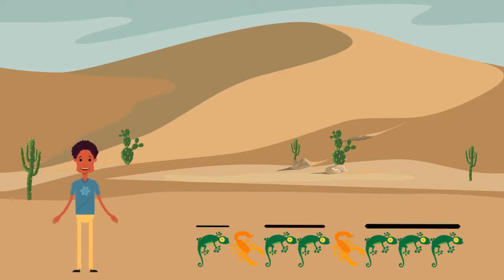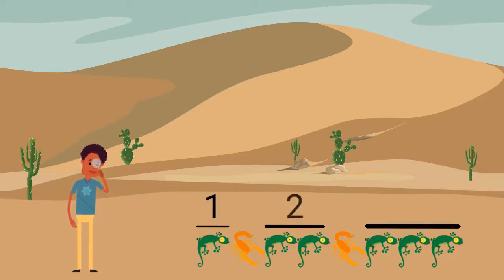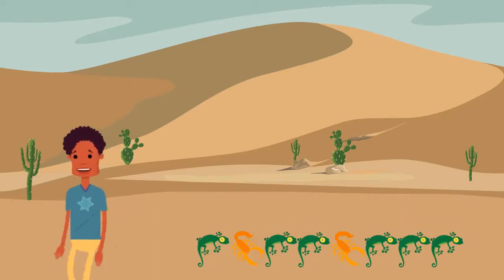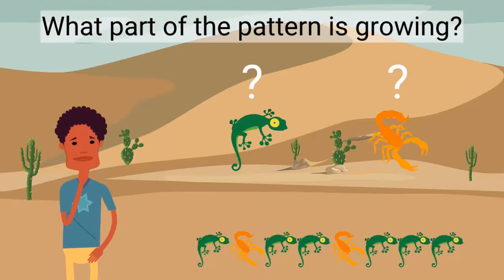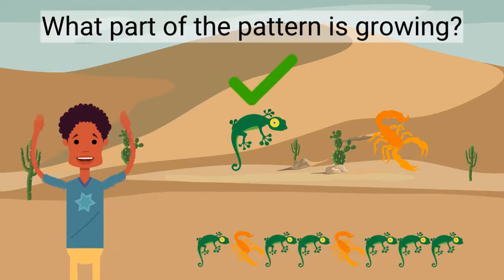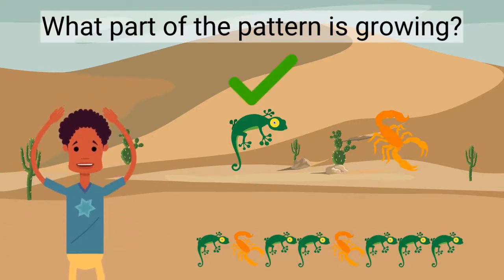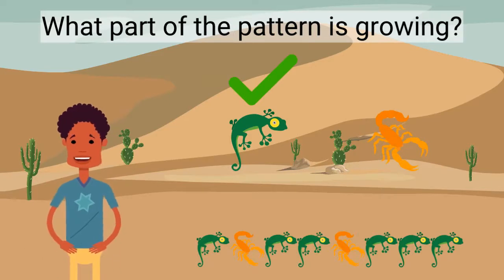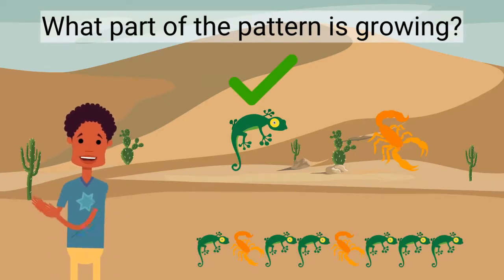The part of the pattern that is growing each time is the number of lizards. The first part of the pattern is one lizard, then a scorpion, then two lizards, then three lizards. What part of the pattern is growing or getting bigger? Yes — the number of lizards is growing. The number of scorpions stays the same, but the lizards continue to grow in number.